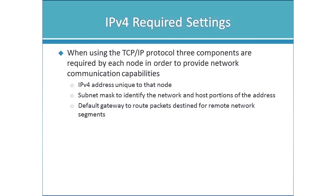TCP/IP — which right now we're referring to as IPv4, since there is an IPv6 we'll cover later — requires three components for network communication. The first is an IP address, which functions similarly to a mailing address in that it's unique to that particular node. Without a unique address, you can't communicate. The second component is a subnet mask.